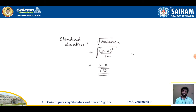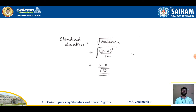Similarly, the standard deviation is the square root of the variance. Since variance = (b - a)²/12, taking the square root gives the standard deviation = (b - a)/√12.